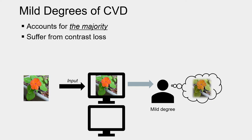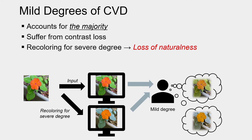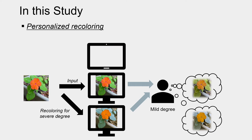On the other hand, people with mild degrees of CVD account for the majority, and they also suffer from loss of contrast when they are shown a result which is recolored for severe degree. They may feel unnatural because the deviation from the original image is too outstanding.